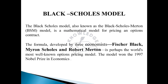The Black-Scholes model, also called the Black-Scholes-Merton model, is a mathematical model used for pricing options contracts. It was developed by Fischer Black, Myron Scholes, and Robert Merton — three eminent economists — and the formula is widely recognized in the world. In 1997, this model received the Nobel Prize in Economics.